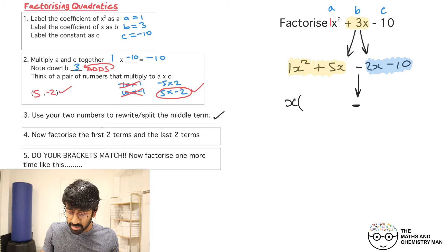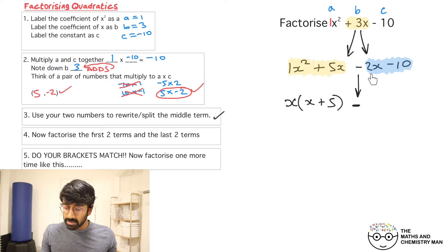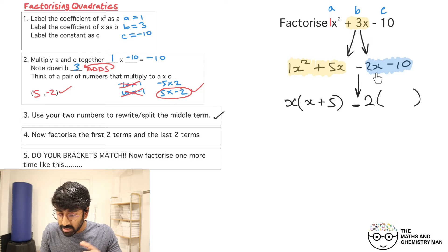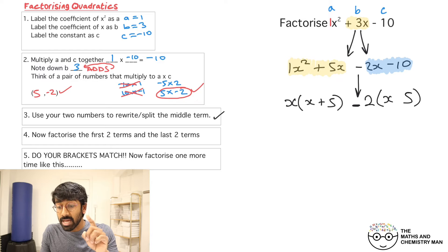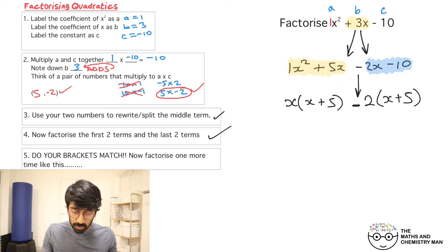What can you take out of the first two terms that's common? You can only take an x out, so x on the outside and x plus 5 inside. For the blue part, you've got 2x and 10 — you can take out a 2. Inside the bracket: minus 2 times x gives minus 2x, and minus 2 times positive 5 gives negative 10. So step four is done.